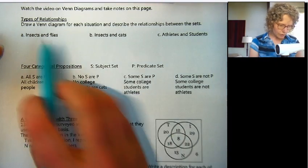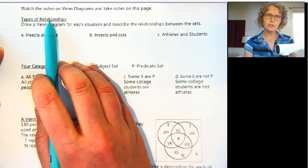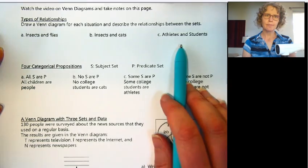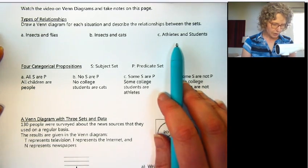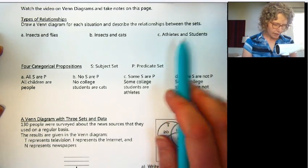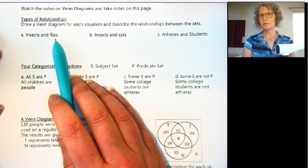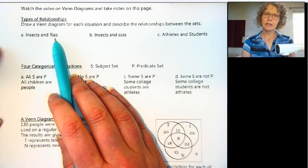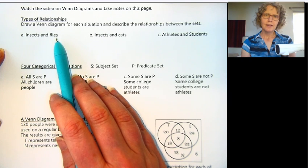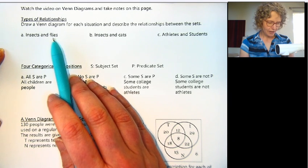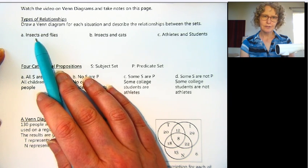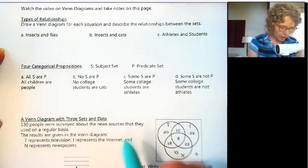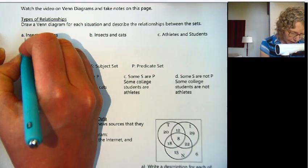We're going to be looking at different relationships — three different types — and draw a Venn diagram for each situation. Insects and flies are two different sets, two different groups. Do they have a connection or relationship? Yes, flies are insects. There aren't any flies that aren't insects. So let's draw our Venn diagram.